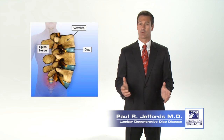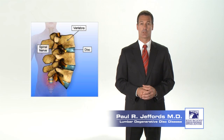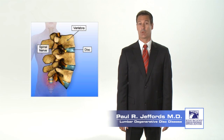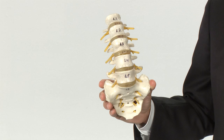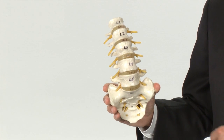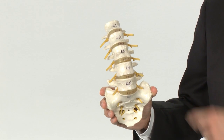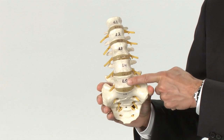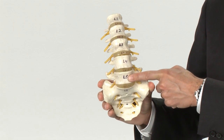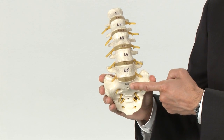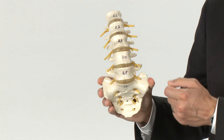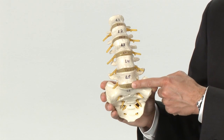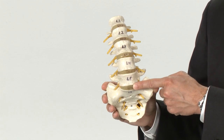The spinal column consists of 33 bones called vertebrae that are stacked one on top of the other like building blocks. In the lumbar spine, there are five of these vertebrae labeled L1 through L5. The L5 is at the bottom and sits above the sacrum or tailbone. In between each of these vertebrae, there are spinal discs, which serve as cushions or shock absorbers for the spine.